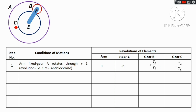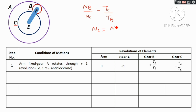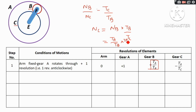To find gear C, apply the gear ratio: NB divided by NC equal to TC divided by TB. So NC equals NB into TB by TC. NB was already found as TA by TB. Substituting TA by TB, then multiplying by TB by TC — TB cancels out — giving NC in terms of TA and TC.